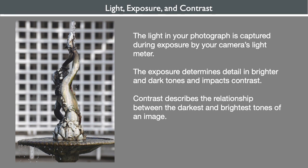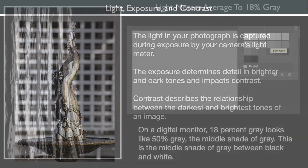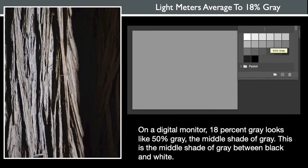Contrast describes the relationship between the darkest and brightest tones of an image. The light meter interprets the image as points with different brightness, as if the image was all black and white. Each point is evaluated against the camera's zero, which is an 18% gray. On a digital monitor, 18% gray looks like 50% gray, which is the middle shade of gray between black and white.